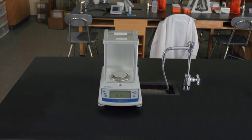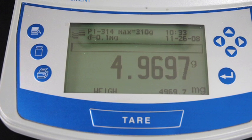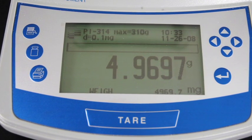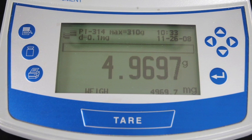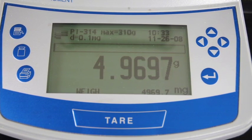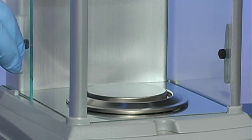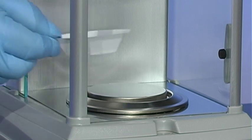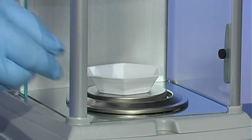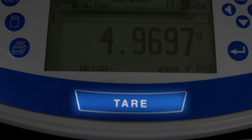The most commonly used balance in biotech laboratories is called an analytical balance. An analytical balance allows us to take very precise measurements up to four places to the right of the decimal point. Sliding glass doors prevent air currents from affecting the measurements. The tare button zeroes out the balance.